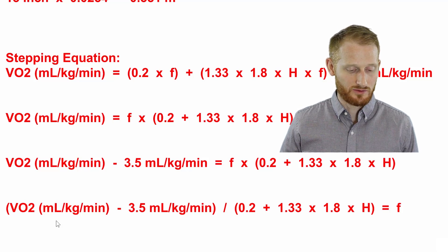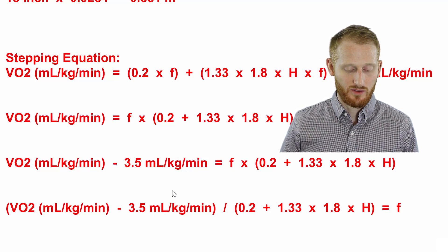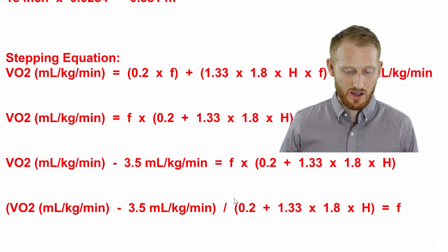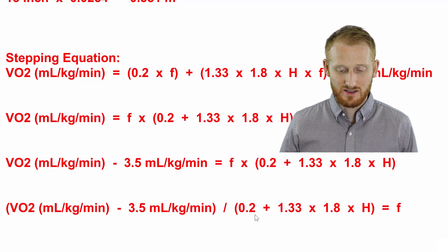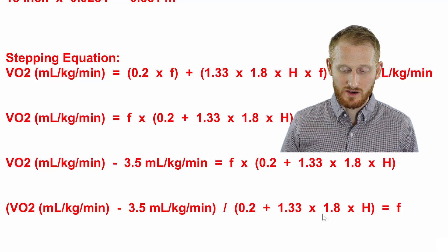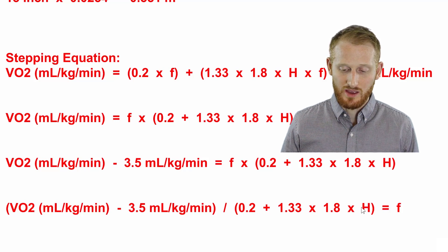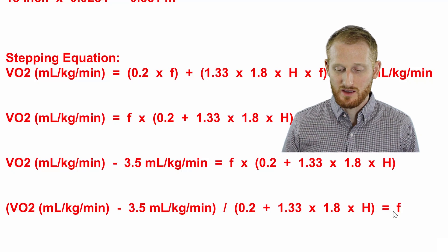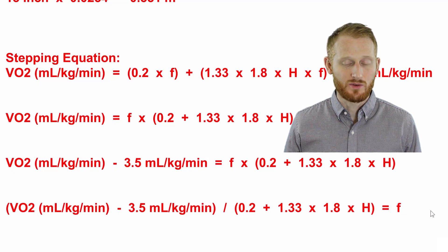So we end up with our final rearranged equation. We have relative VO2 minus 3.5 in parentheses, divided by open parentheses 0.2 plus 1.33 times 1.8 times the height close parentheses, equals our step frequency.